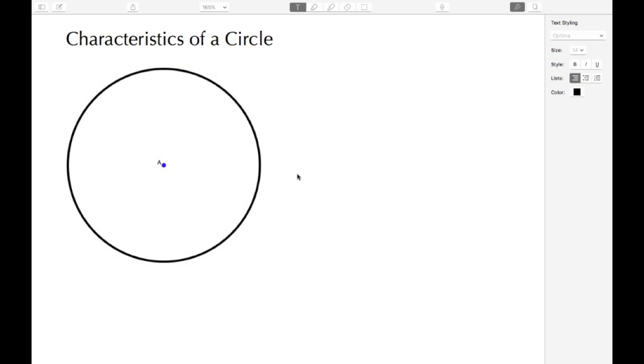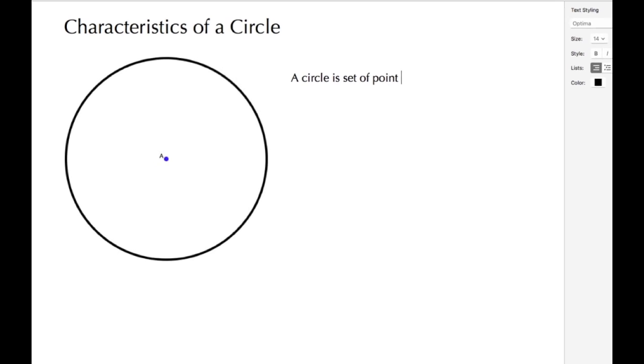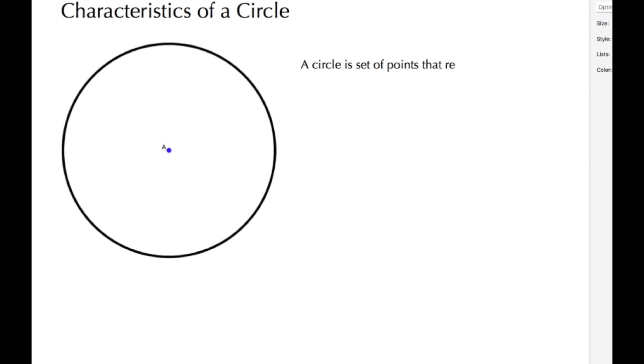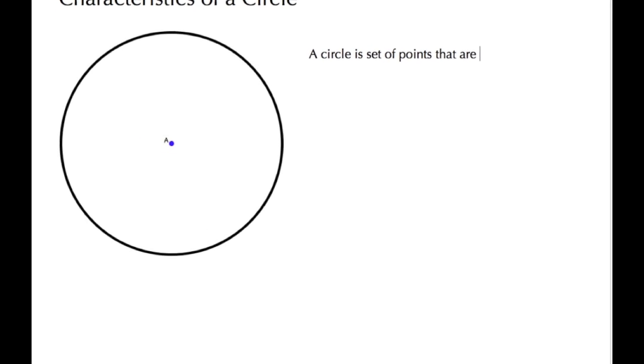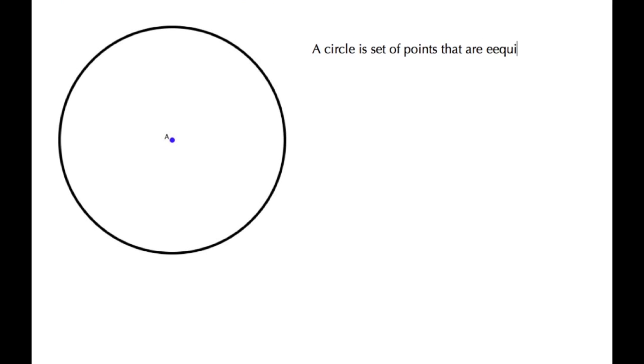Welcome back to ajspeller.com. In today's video, we're going to learn about the characteristics of a circle. Let's begin by defining what a circle is. A circle is a set of points that are equidistant, which really means the same distance, from a single point called the center.